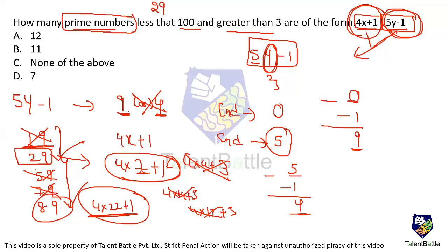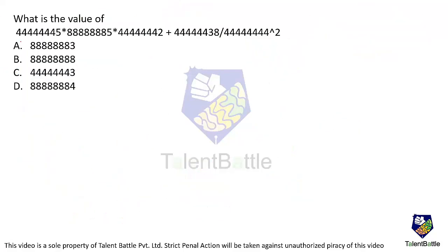Only 29 and 89 satisfy both conditions. The question asks how many prime numbers satisfy both forms — the answer is 2, which corresponds to option C.